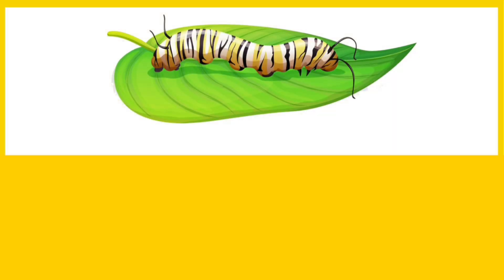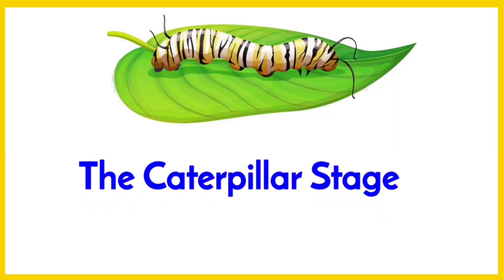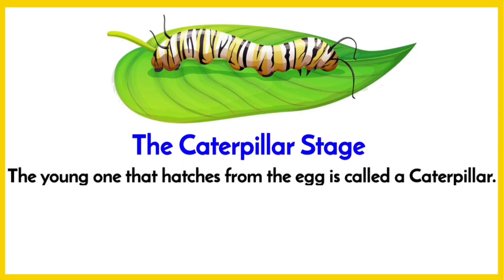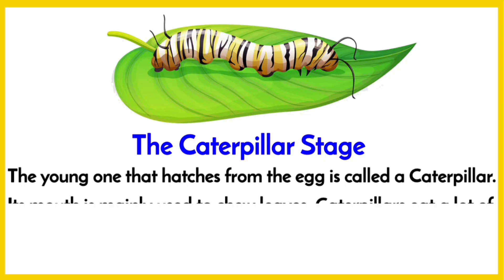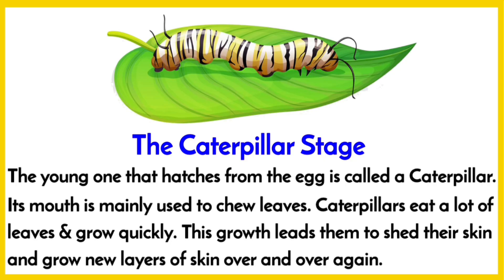The second stage is the caterpillar stage. The young one that hatches from the egg is called a caterpillar. Its mouth is mainly used to chew leaves. Caterpillars eat a lot of leaves and grow quickly. This growth leads them to shed their skin and grow new layers of skin over and over again.